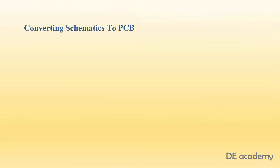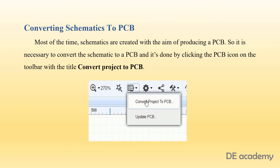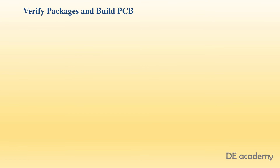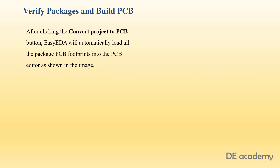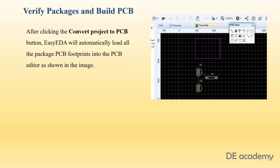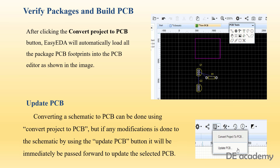Now, converting schematics to PCB. Most of the time, schematics are created with the aim of producing a finished PCB. It is necessary to convert the schematic to a PCB, and this is done by clicking the PCB icon on the toolbar titled 'Convert Project to PCB.' After converting, it is very important to verify the package. EasyEDA will automatically load all the package PCB footprints into the PCB editor. At the final step, if any modifications are done to the schematic, clicking the Update PCB button will immediately pass those changes forward to update the selected PCB.